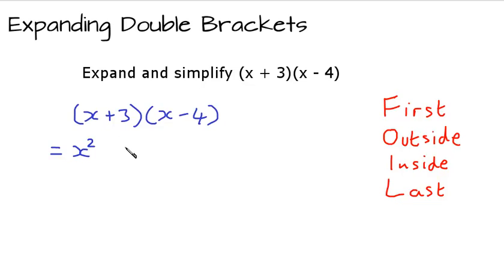The second thing we do is to take the outside terms, which is x multiplied by negative 4. Remember, the sign belongs to the term after it. So x times negative 4 is negative 4x.